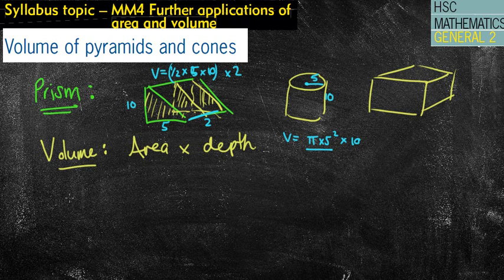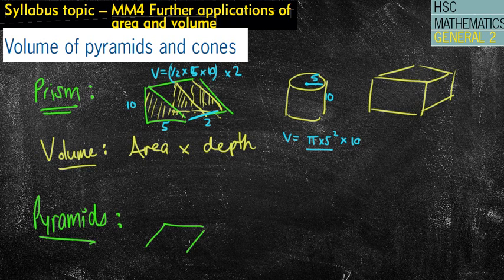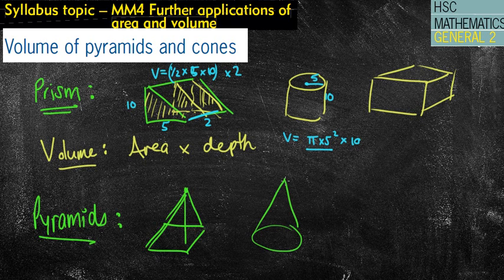So we then lean into pyramids. It says pyramids or cones. Well, a cone is a pyramid. It's just a circular-based pyramid. So if we look at a square-based pyramid or a rectangular-based pyramid, it might look something like this. If I was looking at a circular-based pyramid or known as a cone, it looks like that.